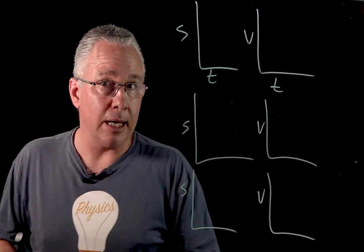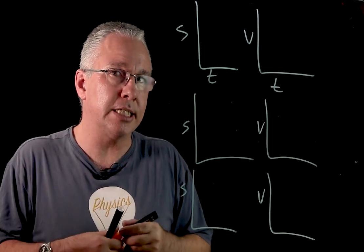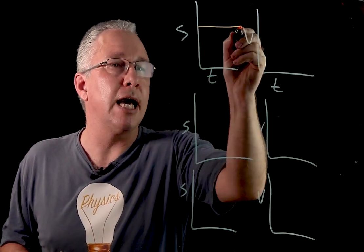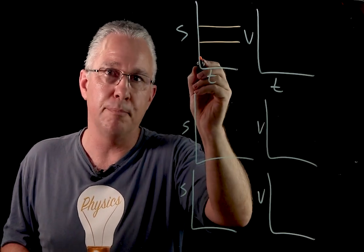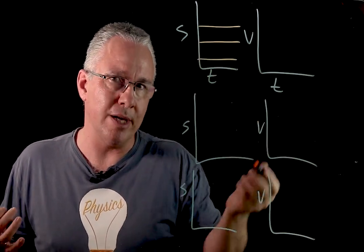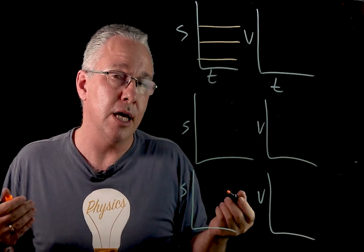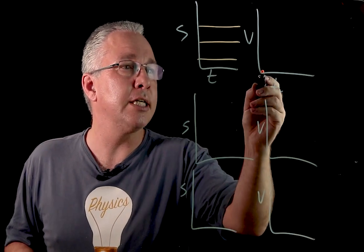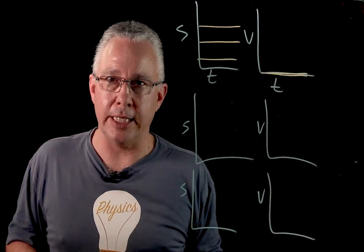So if you remember, then if we have an object that is stationary, then the displacement is a flat line. And that can be in any position because we don't know exactly what its displacement is at any point. Its velocity, however, is always going to be equal to zero.